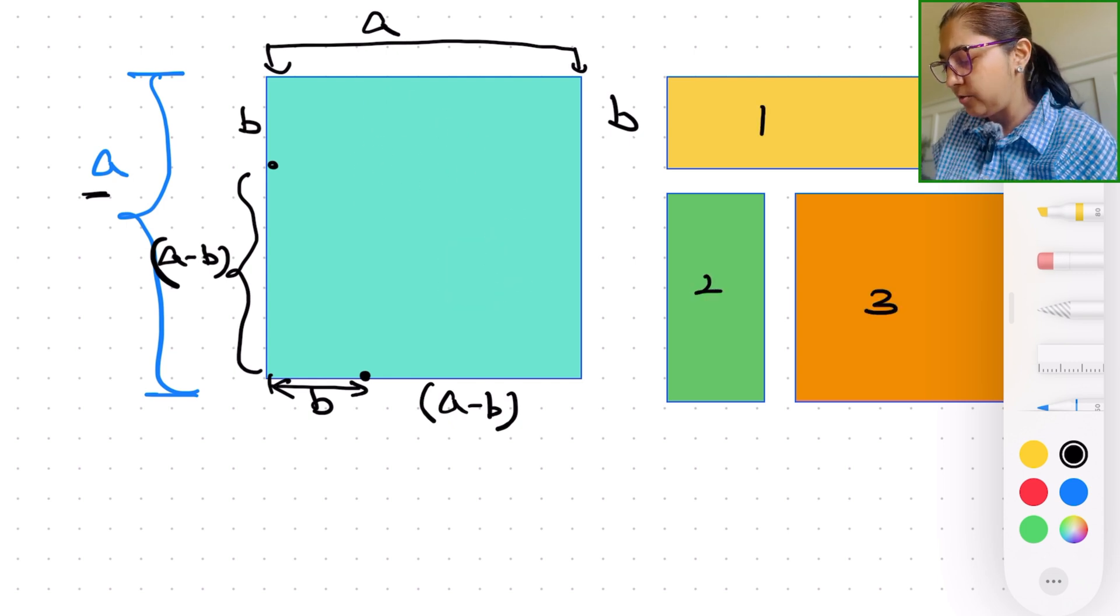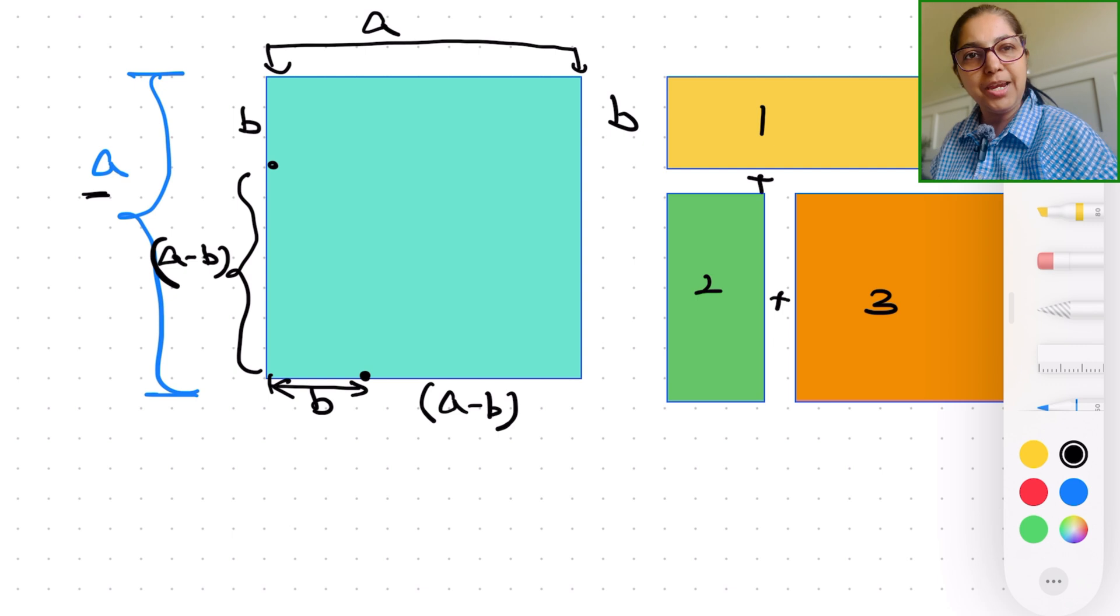So we know what we're talking about. So this is one, this is two, three. So if we add the areas of each of these shapes, we should get the area of the big square, right? So what is that you're looking for? Area of the big square is a times a.